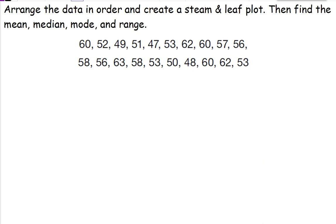In this one, it wants us to arrange the data in order and create a stem and leaf plot, and then find the mean, median, mode, and range. So a stem and leaf plot is another way to show data. We're going to create that first because it's going to help us. The left side is what we call our stem, and the right side is the leaf. Now the stem is going to be the numbers in the tens place. So in this case, we have four, five, and six. The leaf is the number in the ones place.